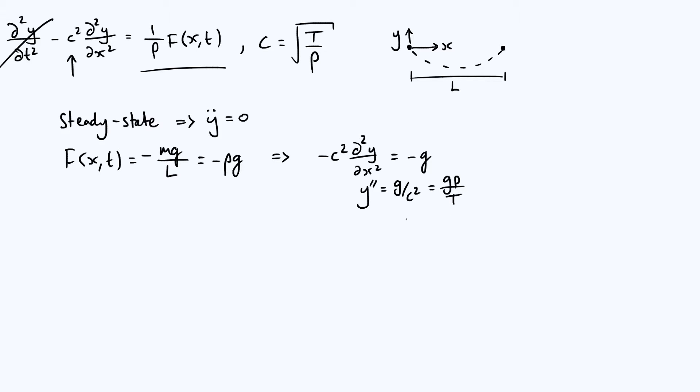So you can just integrate this directly twice. If we integrate with respect to x once, we get that dy by dx, or y prime, is just g rho over t times x, plus some constant, which I'm going to call alpha. You integrate again, your first term then becomes g rho over 2t times x squared. Second term becomes alpha x, and then you get another constant, which I'll call beta.